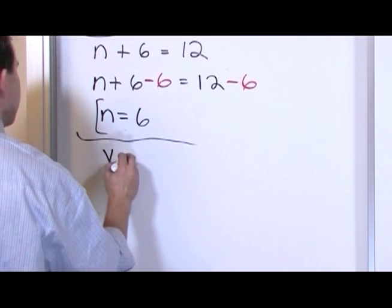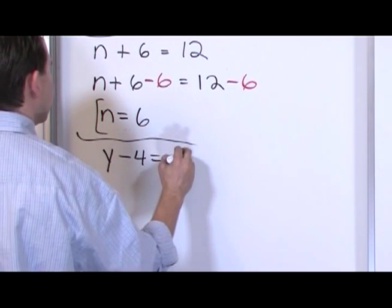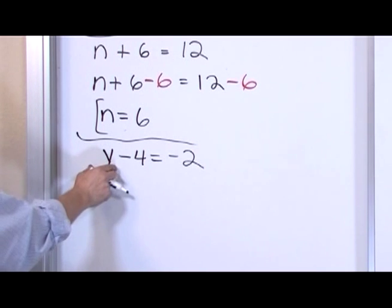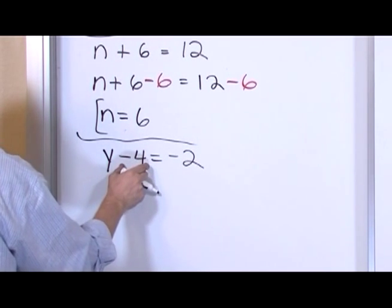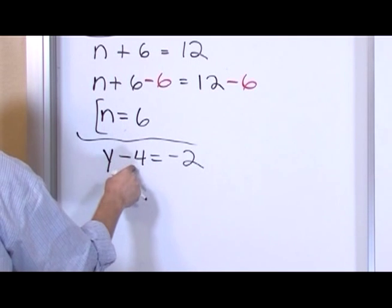What if I have y minus 4 is equal to negative 2? I want to isolate y, so in order to get rid of this 4, I have to do the opposite, so I'm going to add 4.